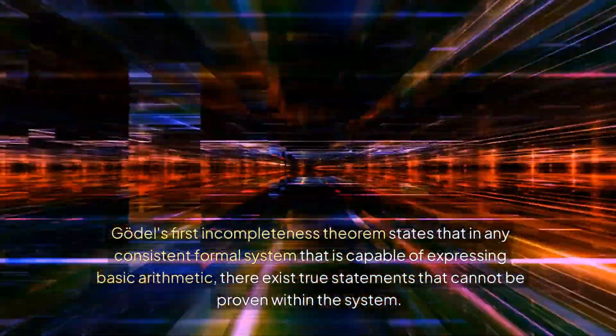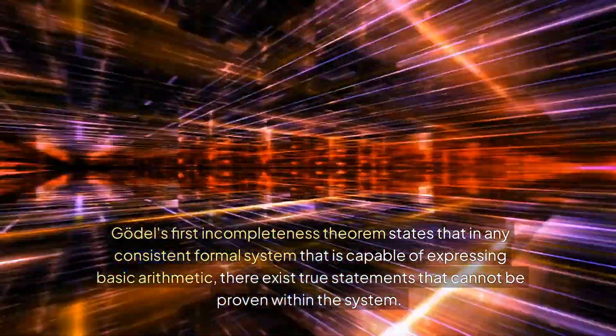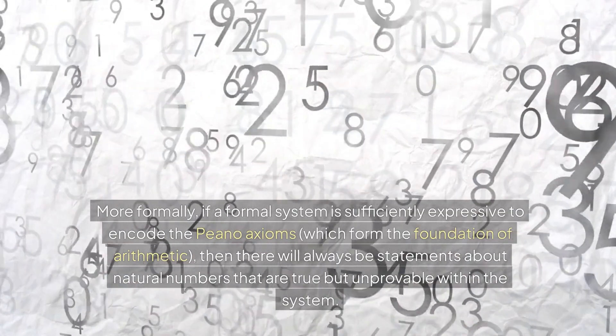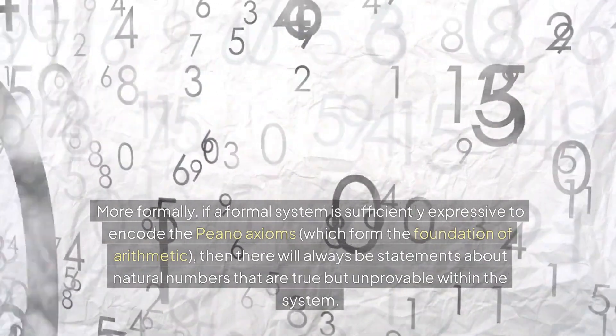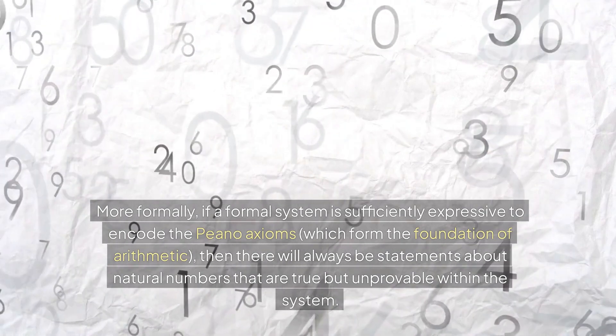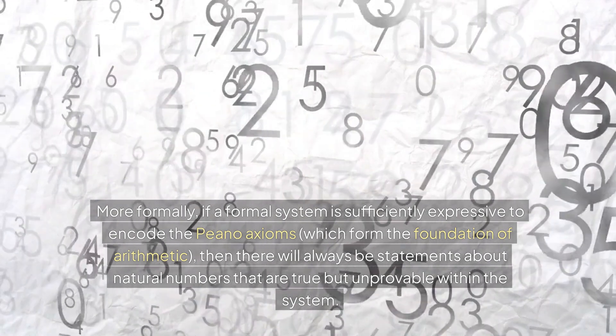First incompleteness theorem: Gödel's first incompleteness theorem states that in any consistent formal system that is capable of expressing basic arithmetic, there exist true statements that cannot be proven within the system. More formally, if a formal system is sufficiently expressive to encode the Peano axioms, which form the foundation of arithmetic, then there will always be statements about natural numbers that are true but unprovable within the system.